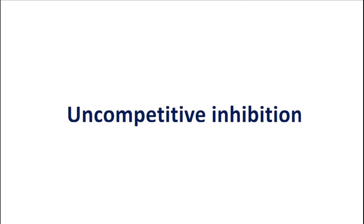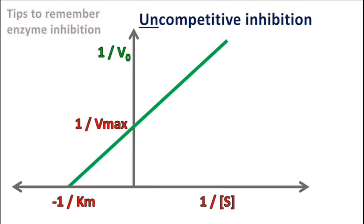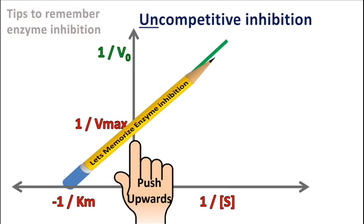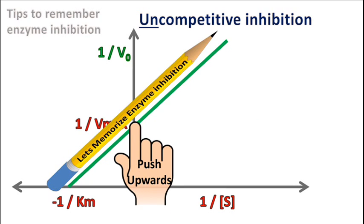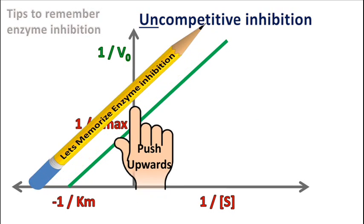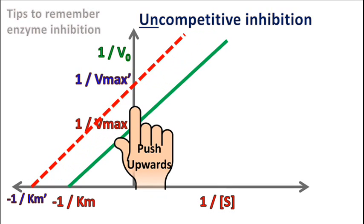For uncompetitive inhibition, place the pencil on the graph and push it upwards. This will be the graph of uncompetitive inhibition. Here, the value of -1/KM and the value of 1/Vmax have both changed.